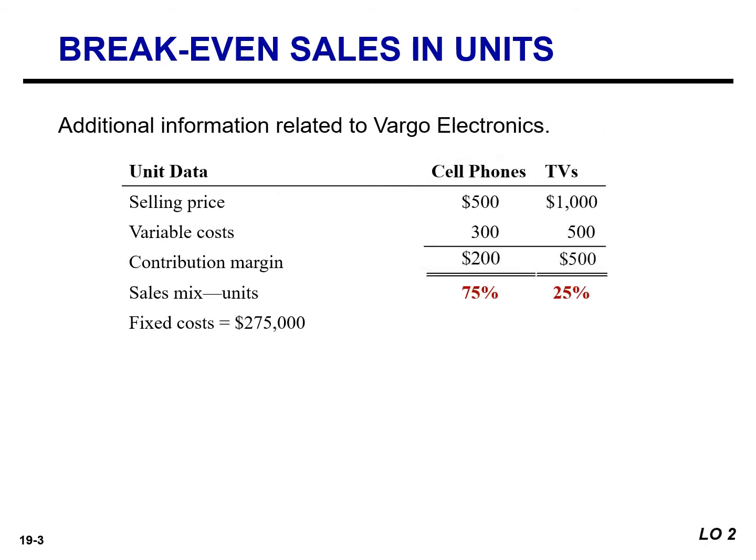In order to calculate a weighted average contribution margin, we need the unit contribution margin for both products. The unit contribution margin for cell phones is $200 and $500 for the TVs. We also need the sales mix — 75% cell phones and 25% TVs — and Vargo's fixed cost, which is $275,000.